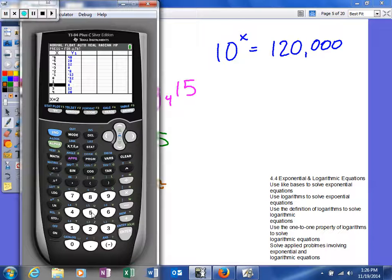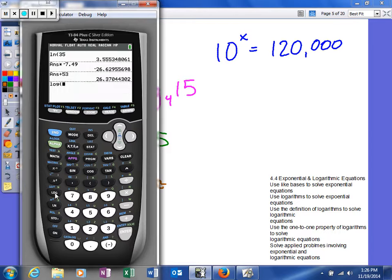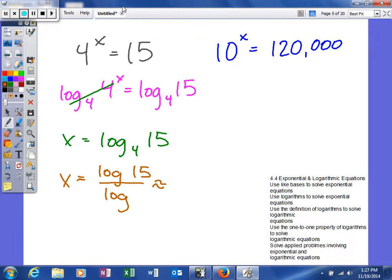So log of 15 divided by the log of 4. And I'm going to round it to 3 decimal places. So I'll do 1.953. So that's basically one example of how we can come up with that nice little number.